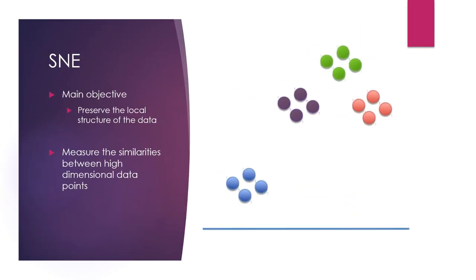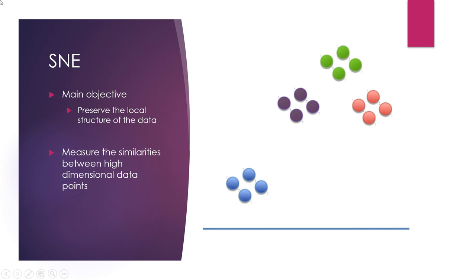Now I am going to talk about SNE in more detail. To explain what SNE does, I am going to treat a two-dimensional space as my higher dimensional space and show you how to map this two-dimensional space into a 1D space based on SNE. The main objective of SNE is to preserve the local structure of the data. In this graph, you can see that data points belonging to one particular cluster are very nearby each other — these kinds of characteristics we call the local structure of the data. You can also see that some clusters are well separated from others, which we call the global structure of the data.